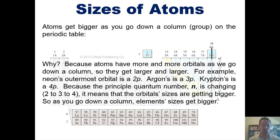For example, neon's outermost orbital is a 2p, while argon's, which is just below it, is a 3p. Krypton's, which is below argon, is a 4p. Because the principal quantum number n is changing, going from 2 to 3 to 4, it means the orbital sizes are getting bigger. 4p orbitals are larger than 3p's, which are larger than 2p's, and so forth. So as you go down a column, element sizes get bigger.